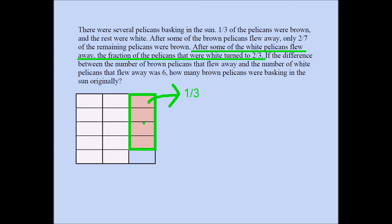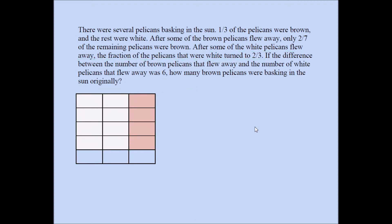If the white portion, after some of the white pelicans fly away, should be two thirds, that means the brown portion has to be one third. I'm going to write one third here. If this is one third, this has to be two thirds, because one third plus one third is two thirds. So that tells me these two parts represent the two chunks of white pelicans that fly away. So I have two parts of white pelicans that flew away, and one part of brown pelicans that flew away.